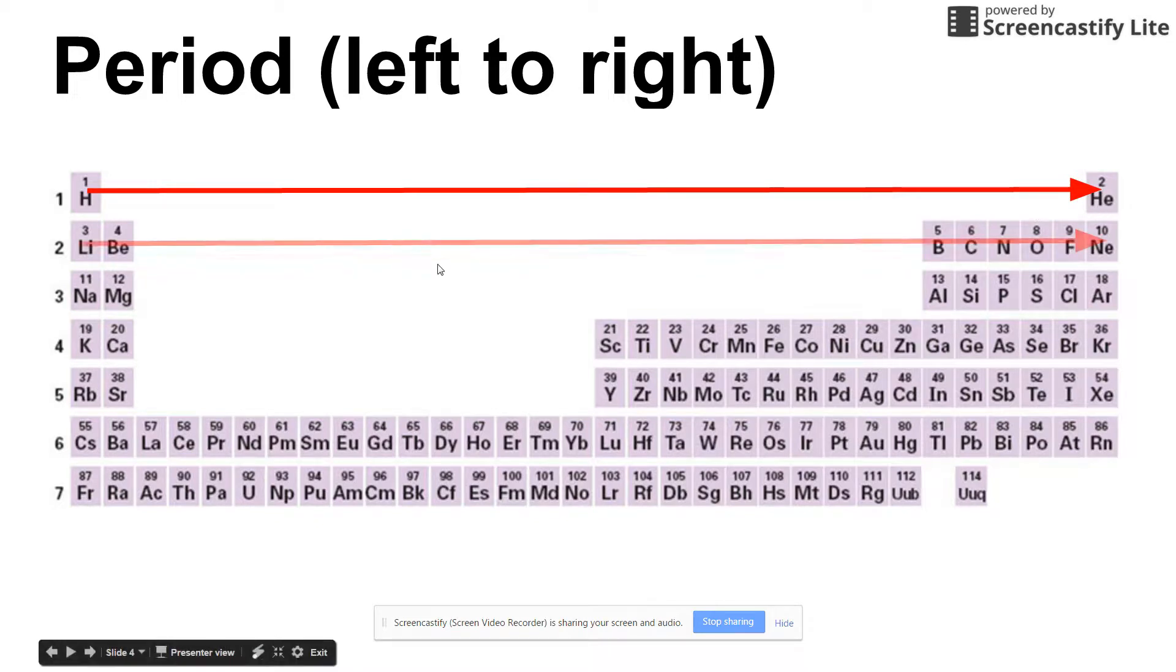The second one contains lithium, beryllium, boron, carbon, all the way up to neon. Then you have sodium all the way up to argon for your period three. There are seven total periods.